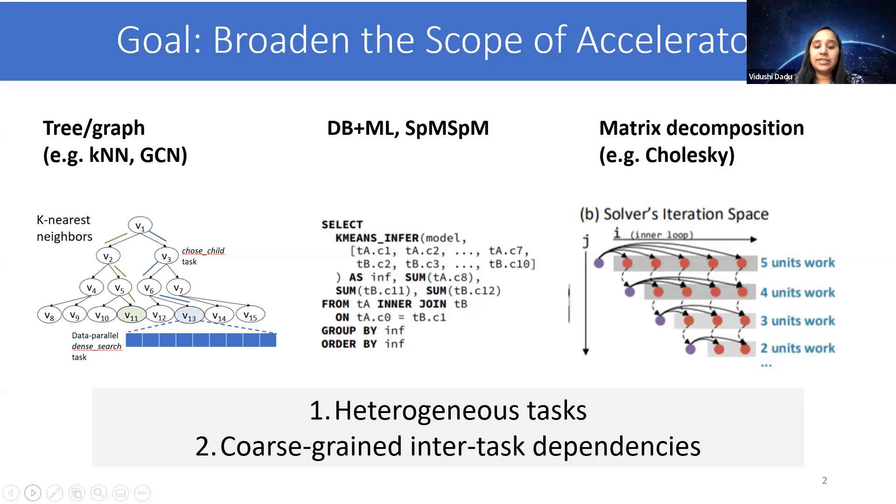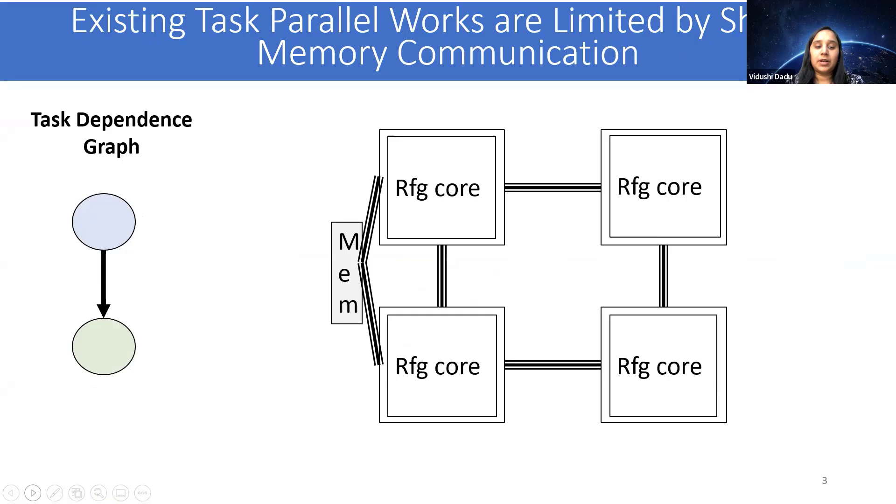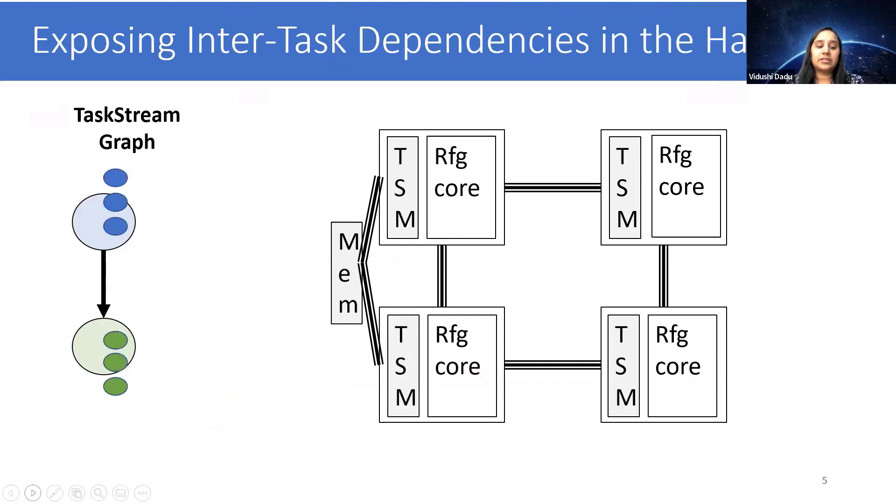To visualize the issue with current task parallel works, consider this task dependence graph, where the nodes are task types and edges represent inter-task dependencies. On a traditional multi-core reconfigurable hardware, different instances of these task types would be scheduled at the cores, while they would communicate via shared memory. The synchronization via shared memory often becomes a critical bottleneck and hurts performance. Our insight is to expose these inter-task dependencies in the hardware and enforce them using a novel and distributed task management system. So in the previous example, the dependencies would now be satisfied by passing through these units.